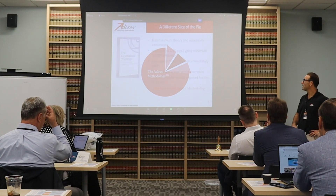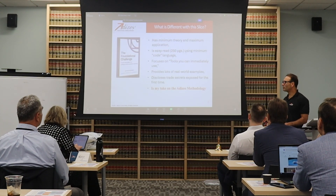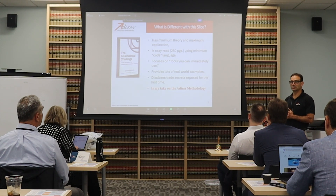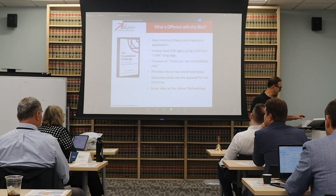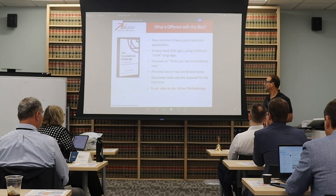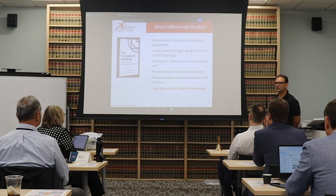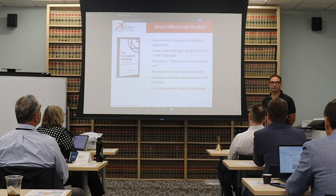What we're looking at here is really my slice of the pie. What was interesting about this book, which I think is different from the other books, is it really has minimum theory and maximum application. Because everybody always asks us: great theory, very interesting — how do I apply it? We're always sticking in the why, all the theories of the why. So here, forget about the why. It's all about the how. Very much tools you can use, very little code language. It's only 250 pages — quite an easy read.